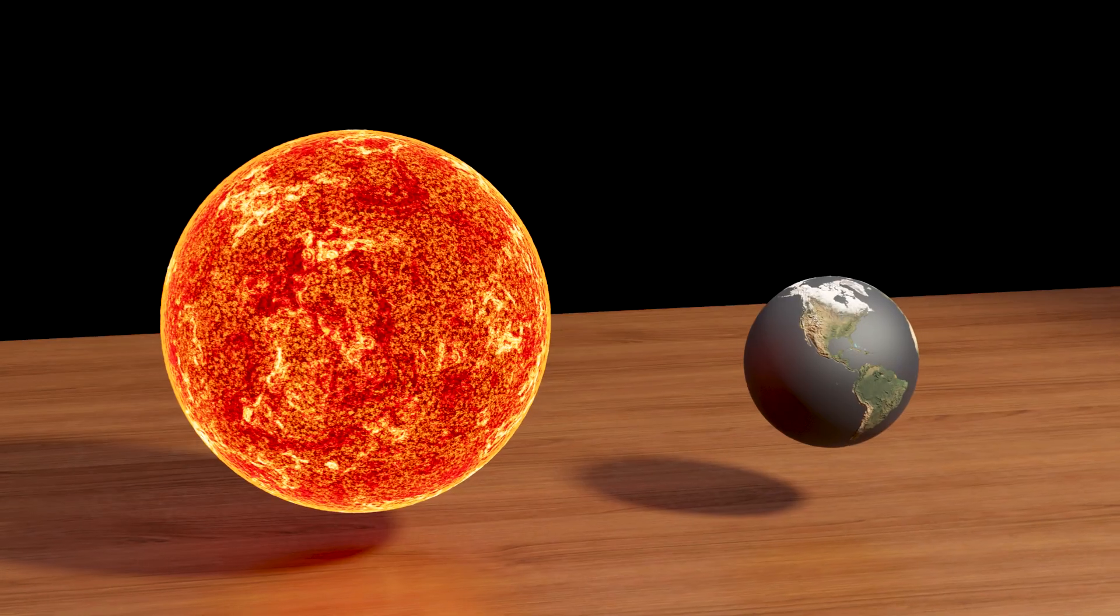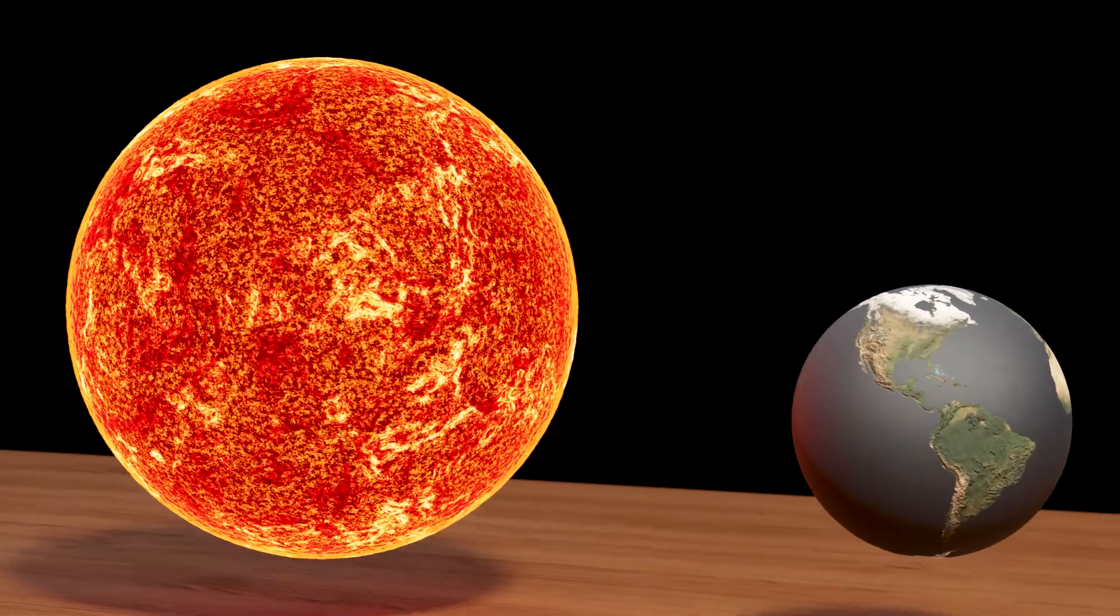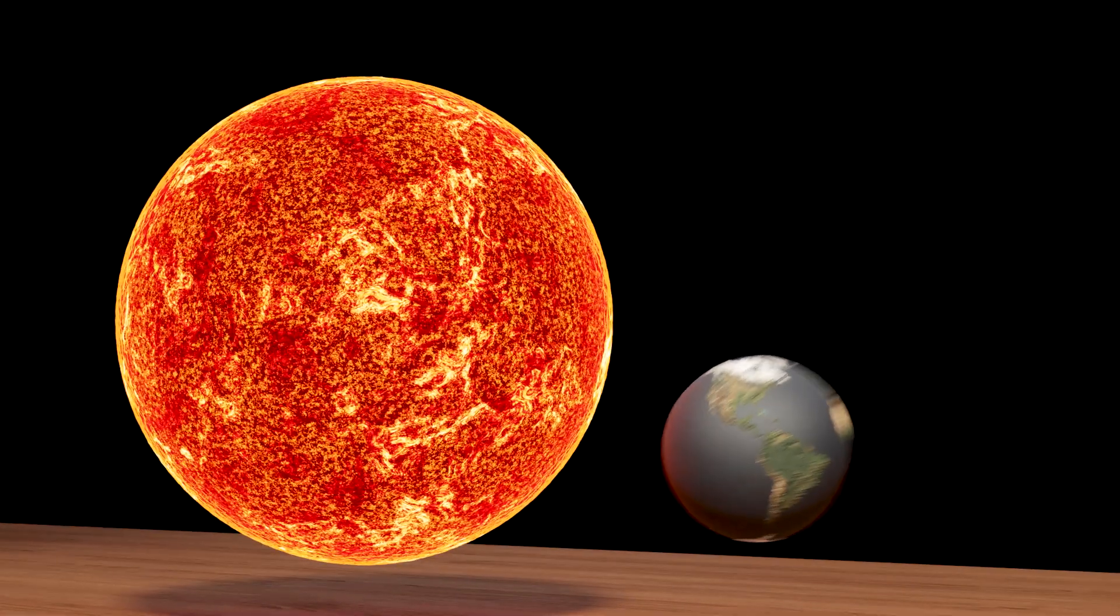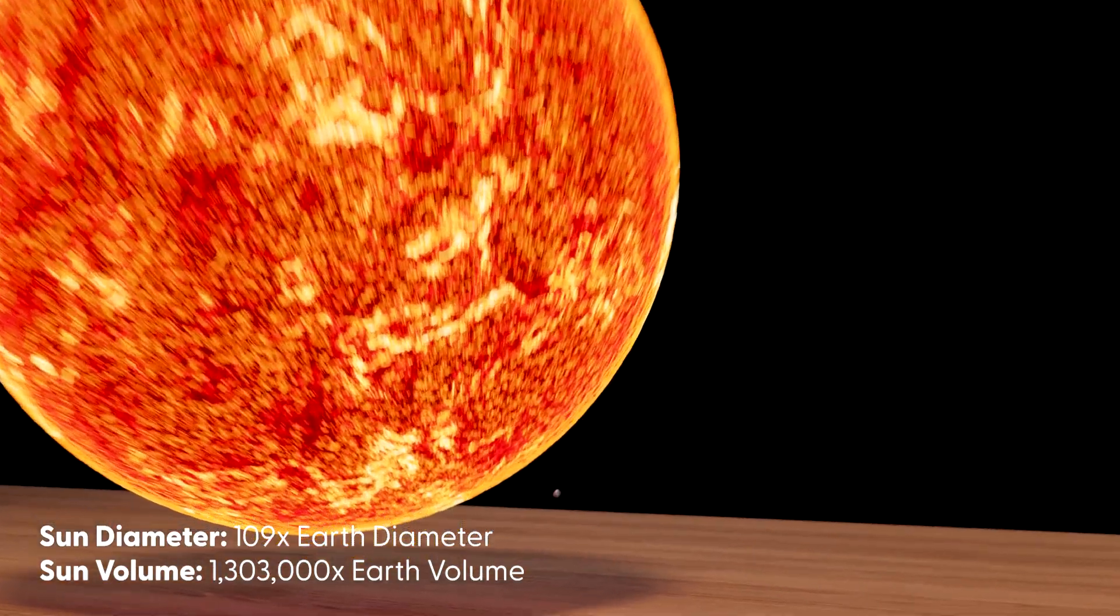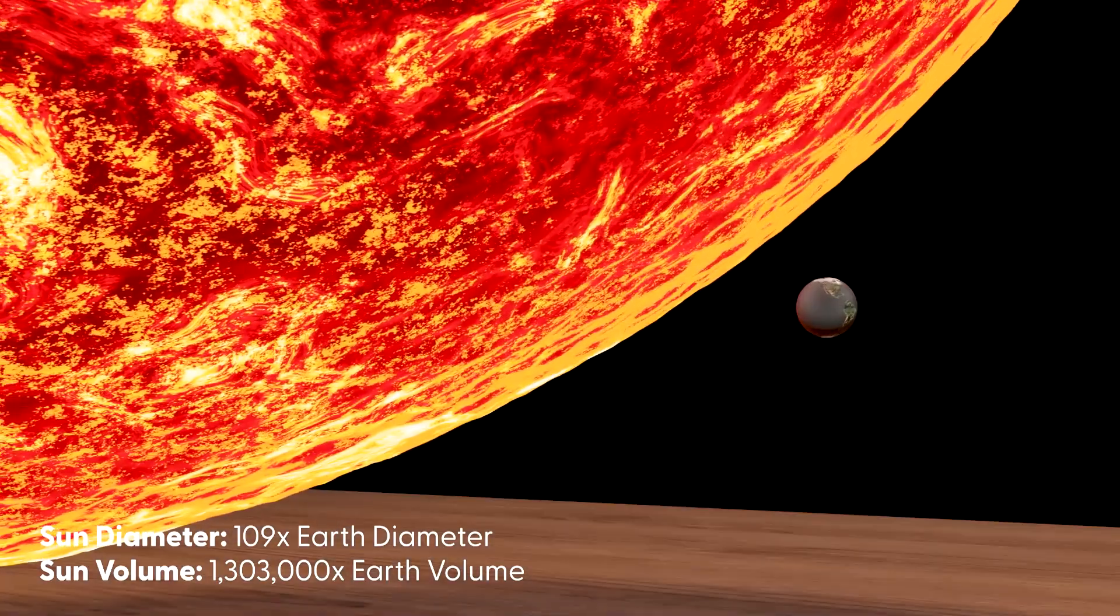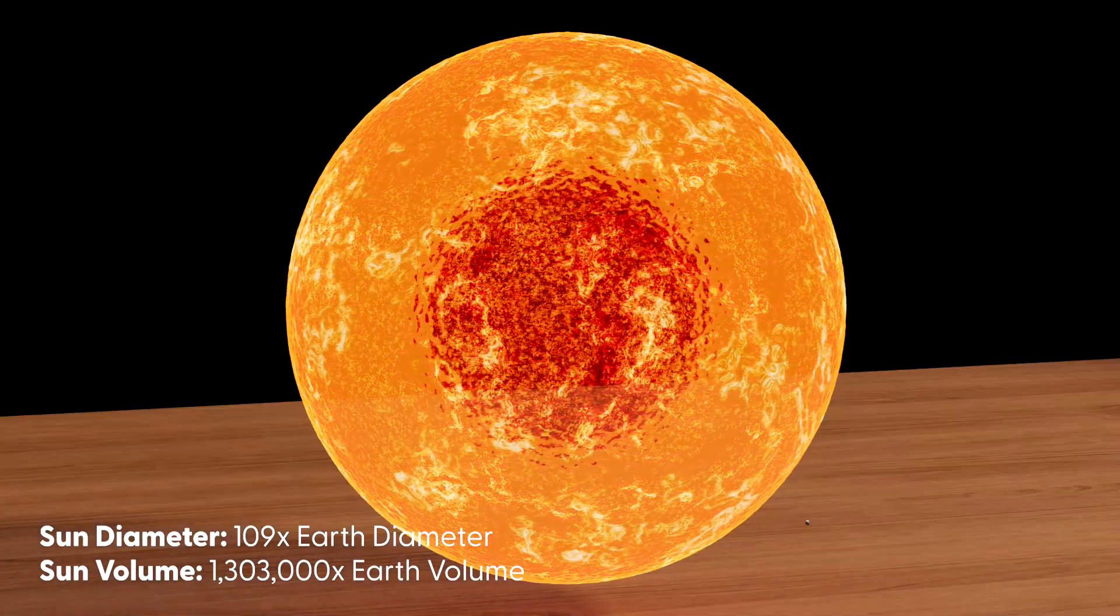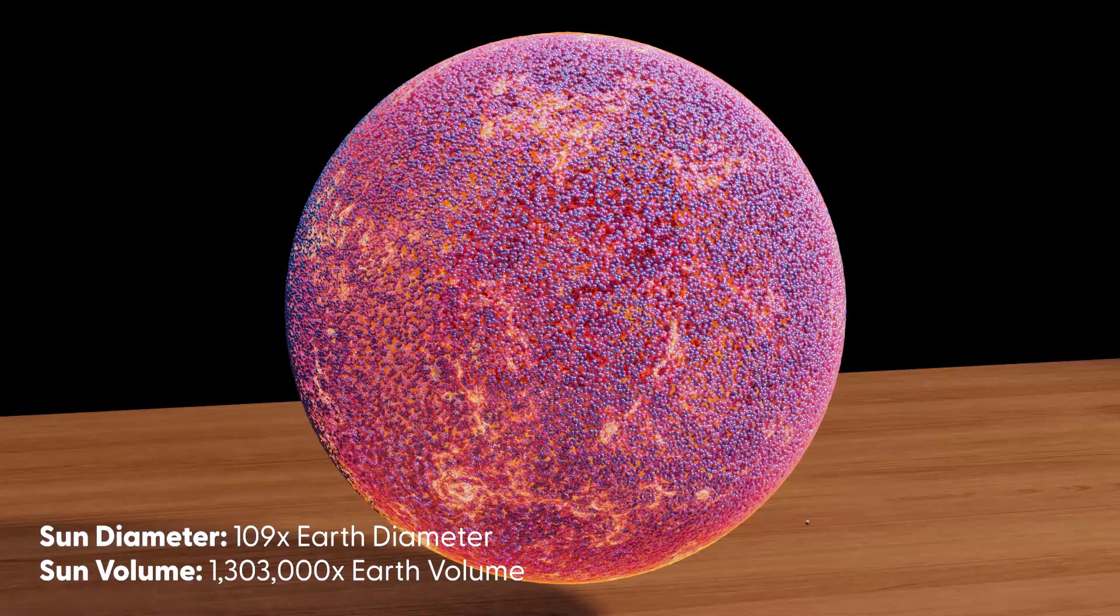The sun, often shown only a few times larger in scale models, is actually 109 times Earth's diameter and 1.3 million times Earth's volume. Earth could fit inside the sun 1.3 million times.